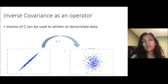The inverse of C can be used to whiten or decorrelate data. So you can go back and forth between correlated and decorrelated data.